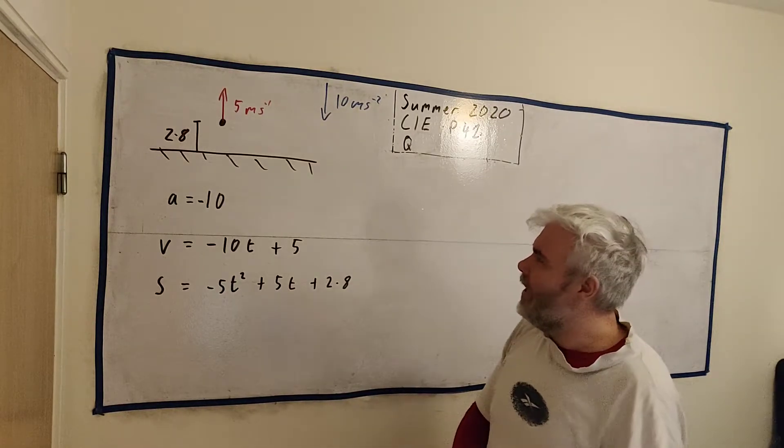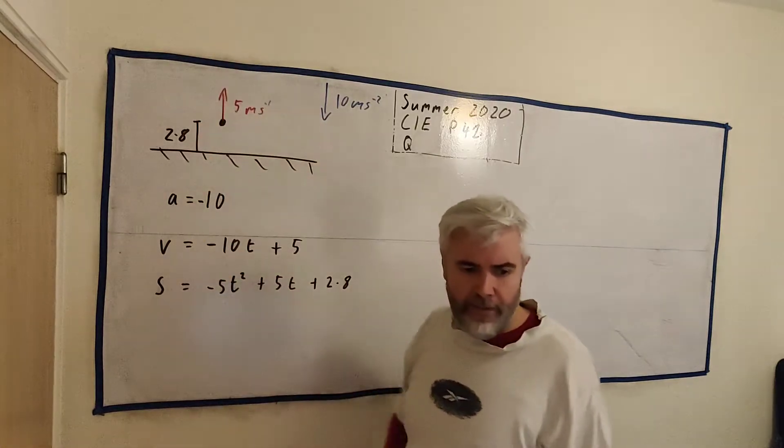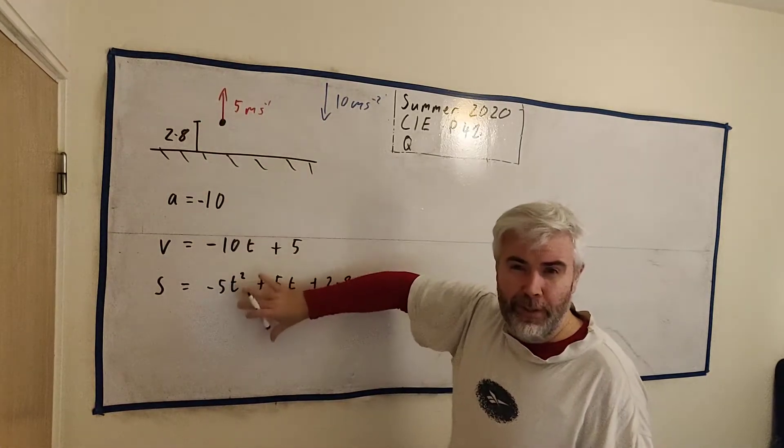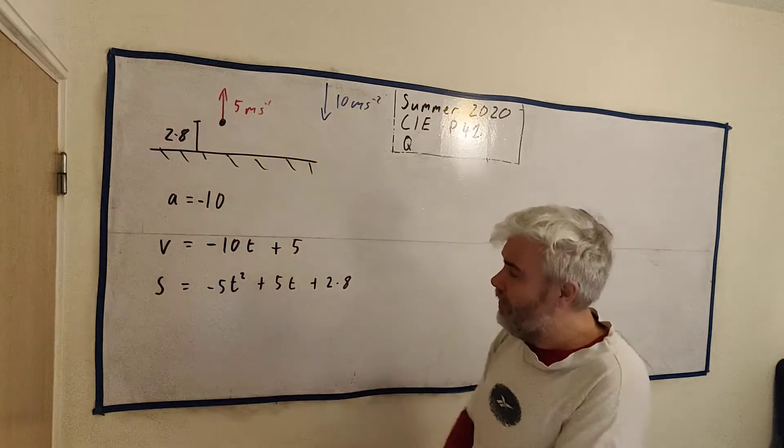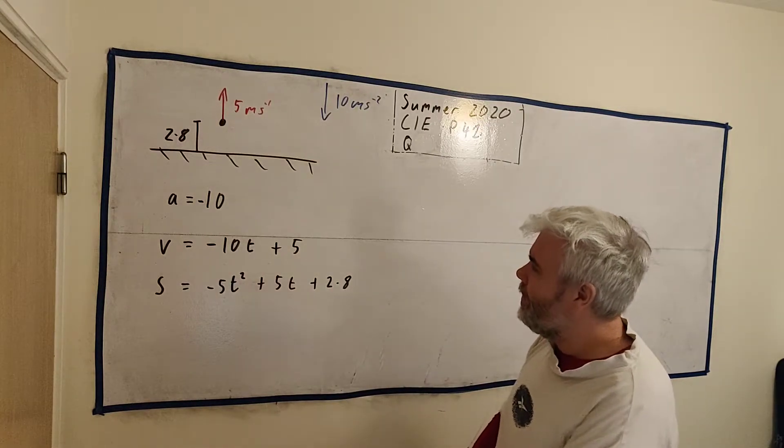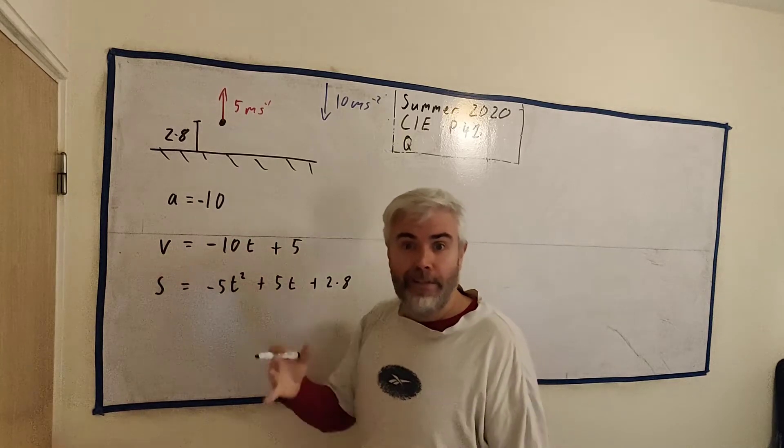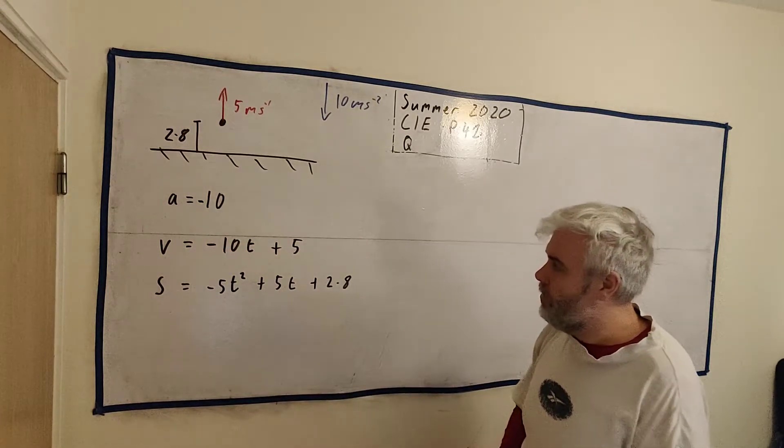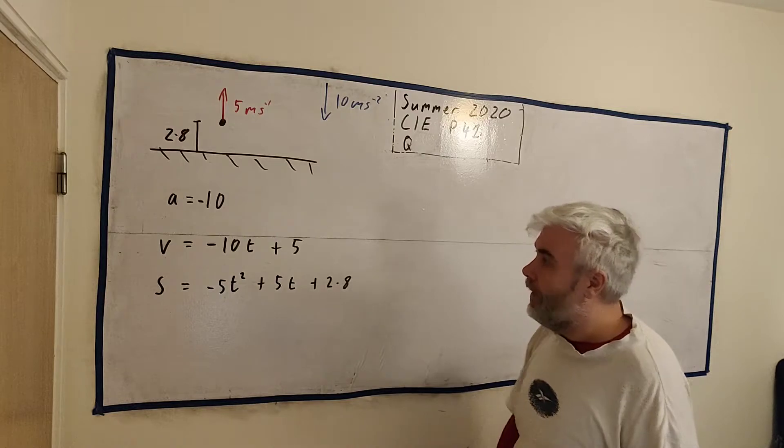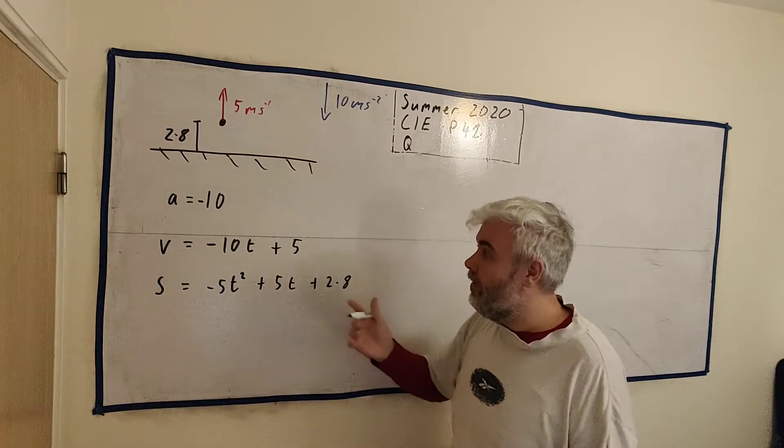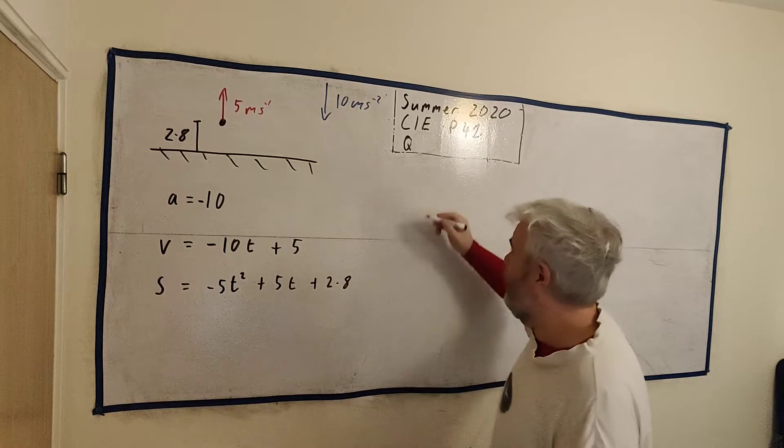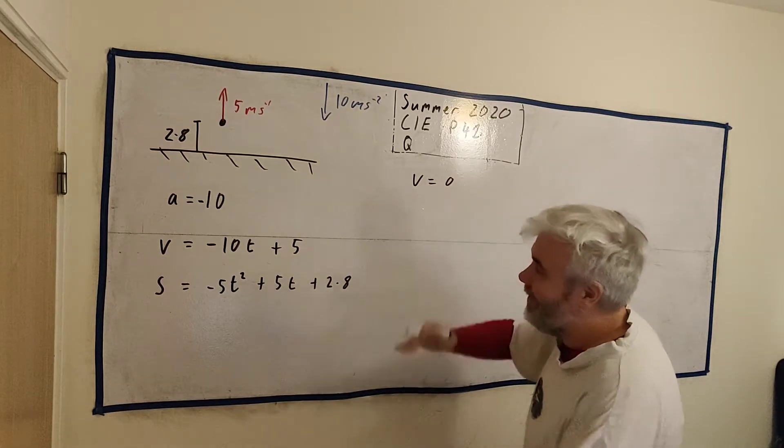So what did they ask? They asked for the greatest height this reaches. I'd always put these three down in any question like this. So the greatest height will be when the speed is equal to 0. This is a common question, something to keep in mind. When we want the greatest height, it's when the velocity equals 0, when it stops.